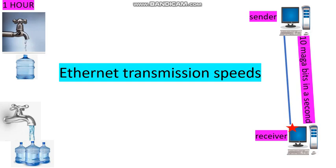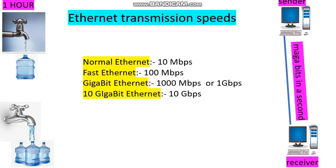Let us assume that these two stations are connected to the Ethernet local area network. Here, if the receiver can receive a maximum of 10 megabits in one second using the medium, then we can say that the data transfer rate is 10 megabits per second. Then we can call that Ethernet as normal Ethernet.